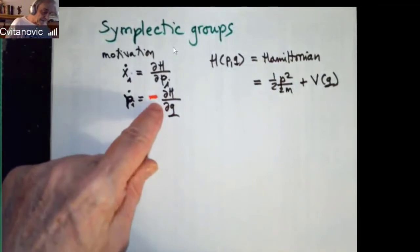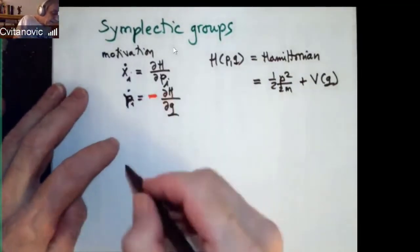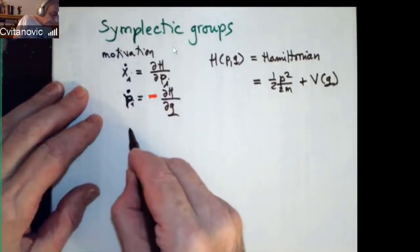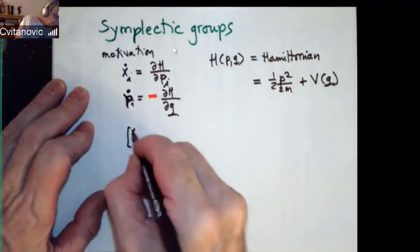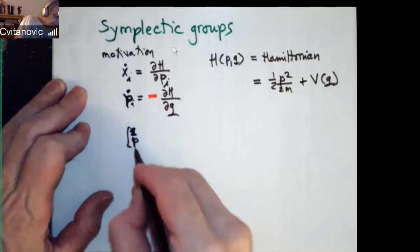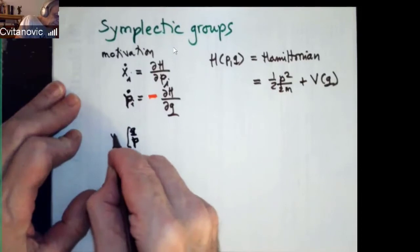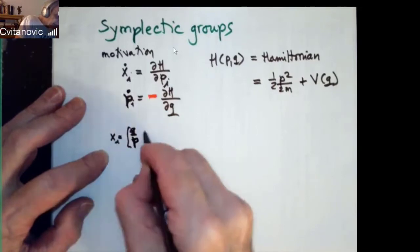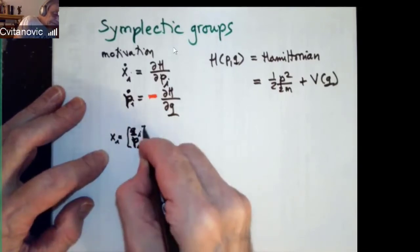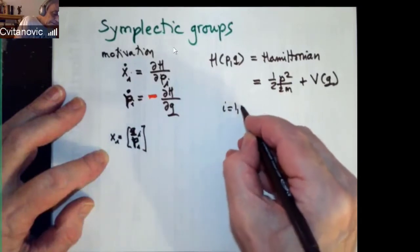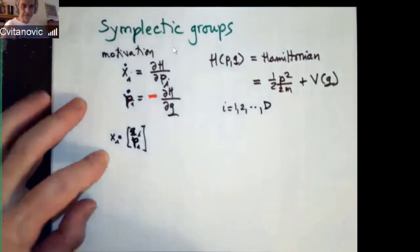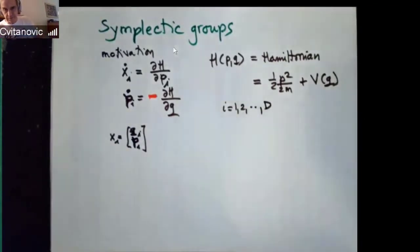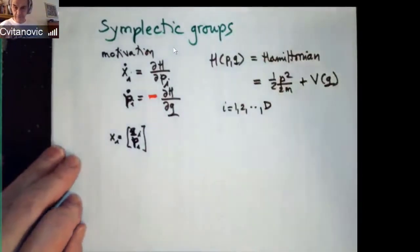So if I decide to put these two guys here and I put them in a little vector, let's call them Q and P and call this a two-dimensional vector—well, two times D dimensional vector. So if I goes from one to the number of degrees of freedom, for example, motion in the plane has two positions and two momenta velocities, all along four variables.